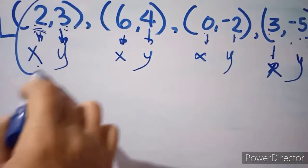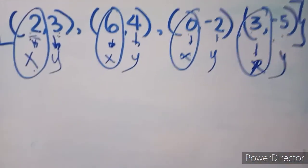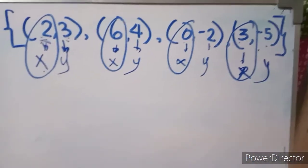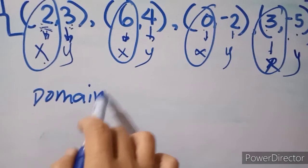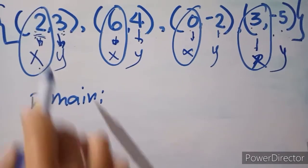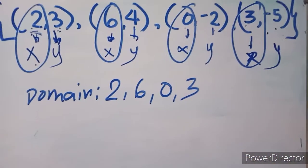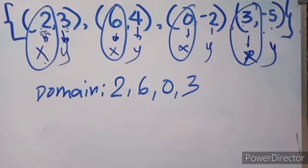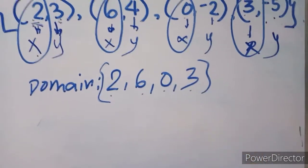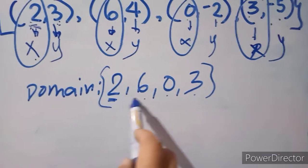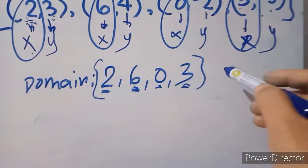Now, we are going to look at all the x values, or the domain. That is what we call the domain. So let's consider the domain of the set of ordered pairs — we have 2, 6, 0, and 3. So if these elements are not repeated, that means this is a function.